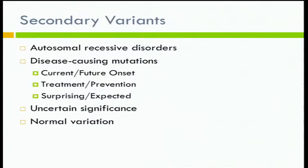We go over more detail about what exactly these secondary variants are and review some examples from our consent form. We give examples and categorize rather than providing a list, because it's not possible to give people a complete list of all the things we can find. We talk about autosomal recessive disorders or carrier status as pretty much the only kind of genomic variation we can be reasonably certain we will find for any individual — things like cystic fibrosis, Tay-Sachs disease, sickle cell anemia, and deafness. That's how we review this with participants.